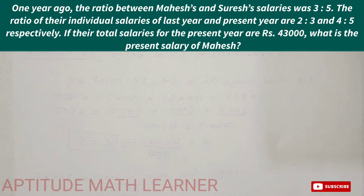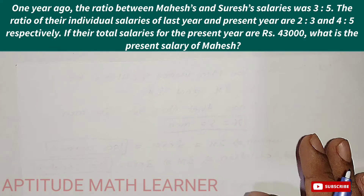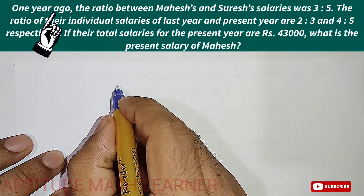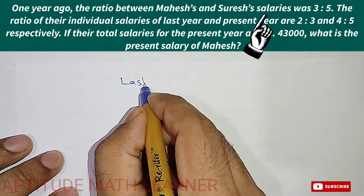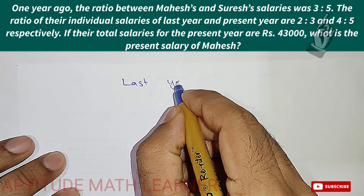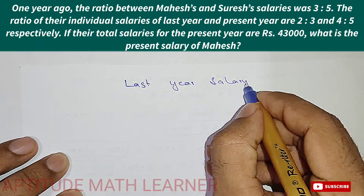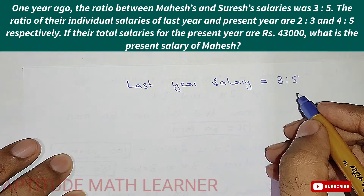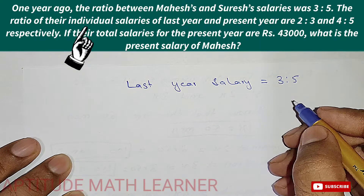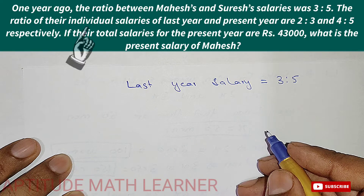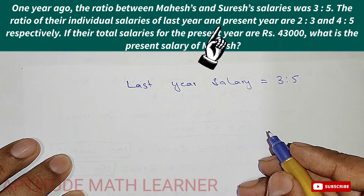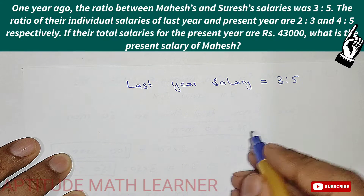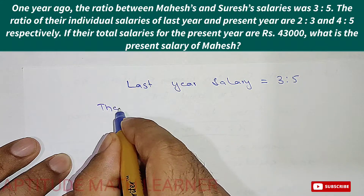We have to find the present salary for Mahesh. The first thing we need to understand is the technical details in this question. Their last year salary is in the ratio 3:5. Now individually, the last year and present year salaries are in the ratio 2:3 and 4:5 respectively.